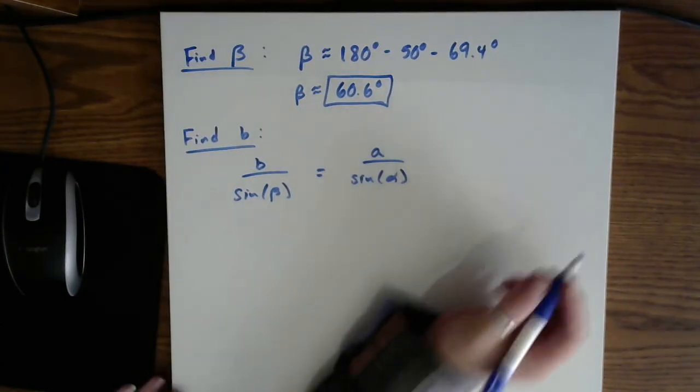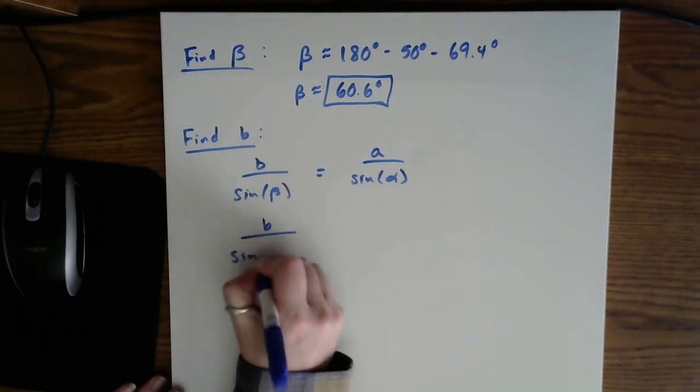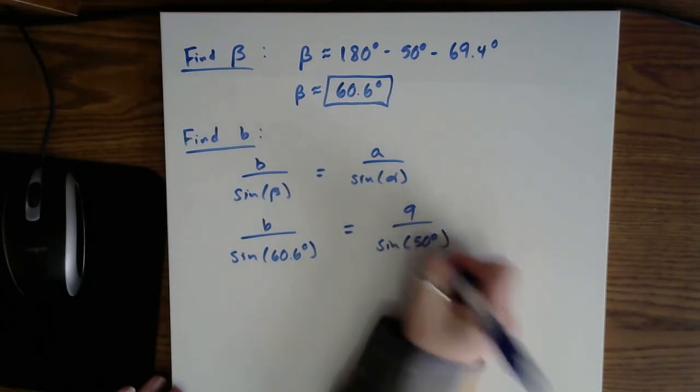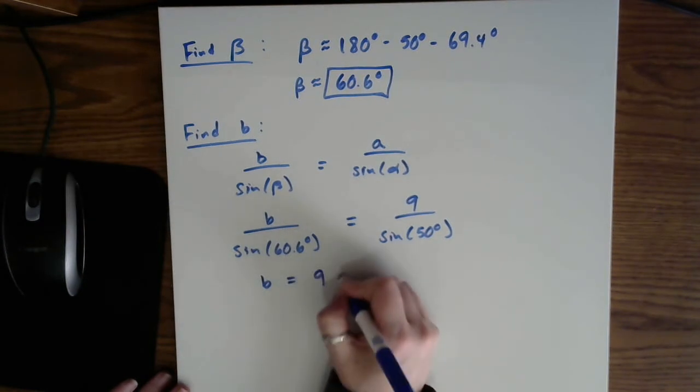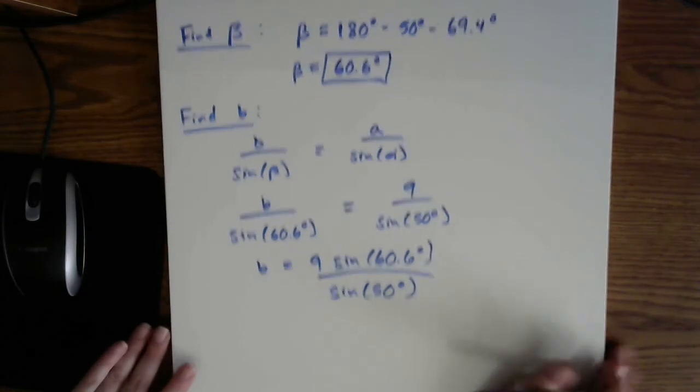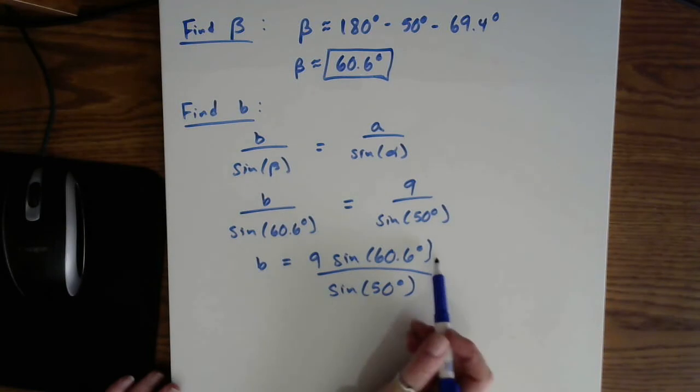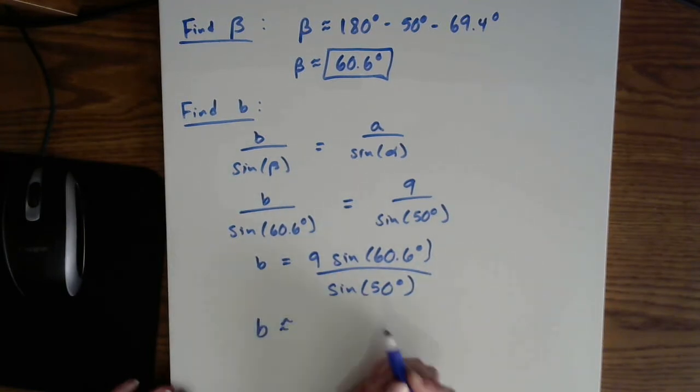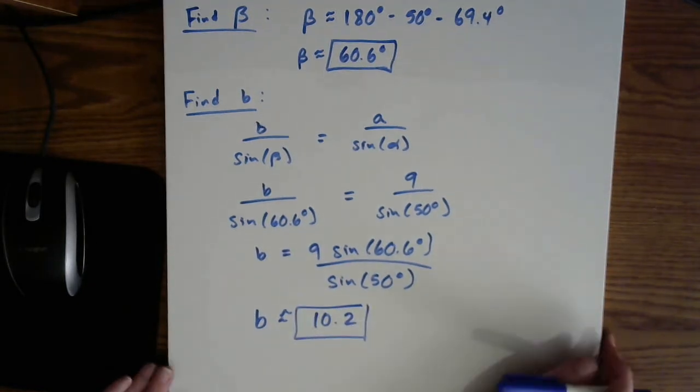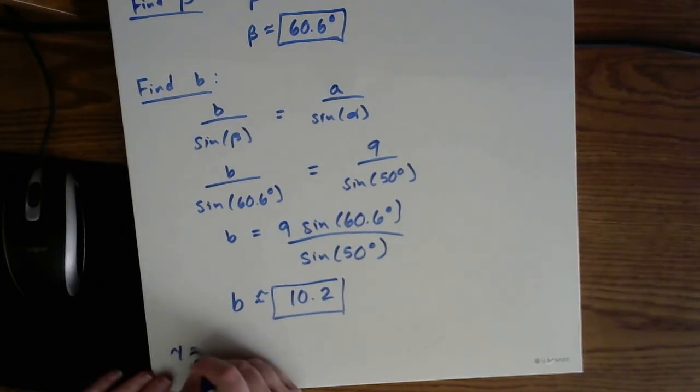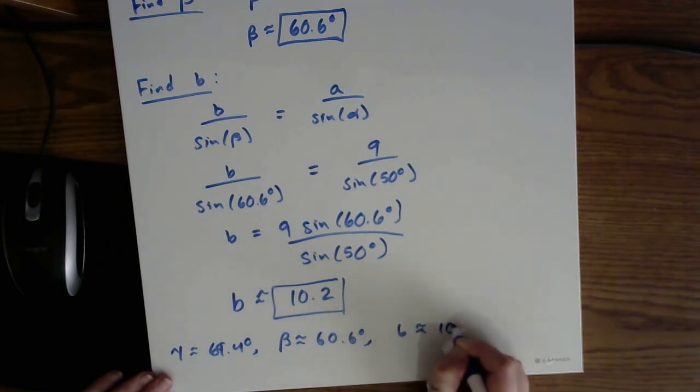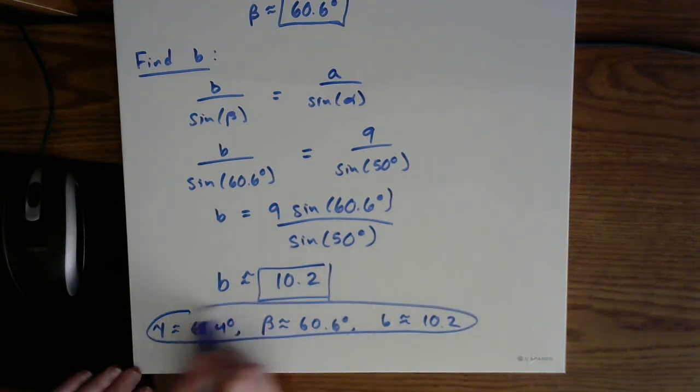So solve for b by multiplying the sine of 60.6 degrees to the other side. So that's just multiplication. From here, you can plug all of that into your calculator. And at some point, you will round according to the directions here. In this example, we rounded to the nearest tenth. And there you have it. So our little summary for this problem was gamma was approximately 69.4 degrees. Beta was approximately 60.6 degrees. And b was approximately 10.2. And we have now found all of the missing pieces. And there's your final solution.